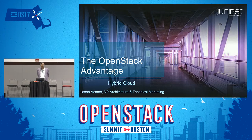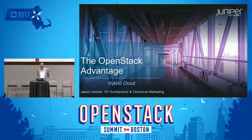Hello and welcome. I'm Jason Venner. I'm the VP of Architecture and Technical Marketing for Contrail and Cloud at Juniper Networks. I've spent probably the last six years working in the OpenStack space. I was the chief architect at a company called Mirantis for five years prior to that, and I built a couple of versions of eBay's clouds and PayPal's clouds.